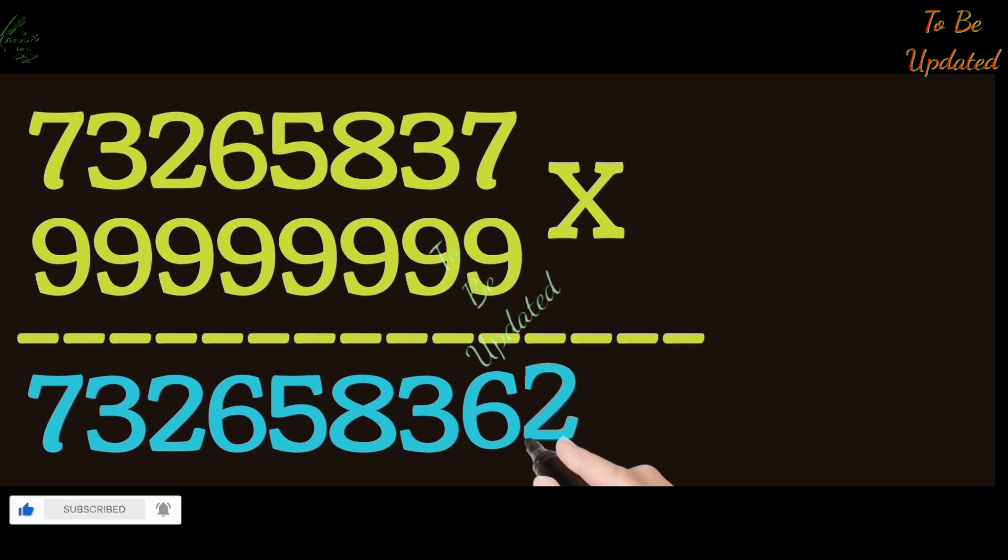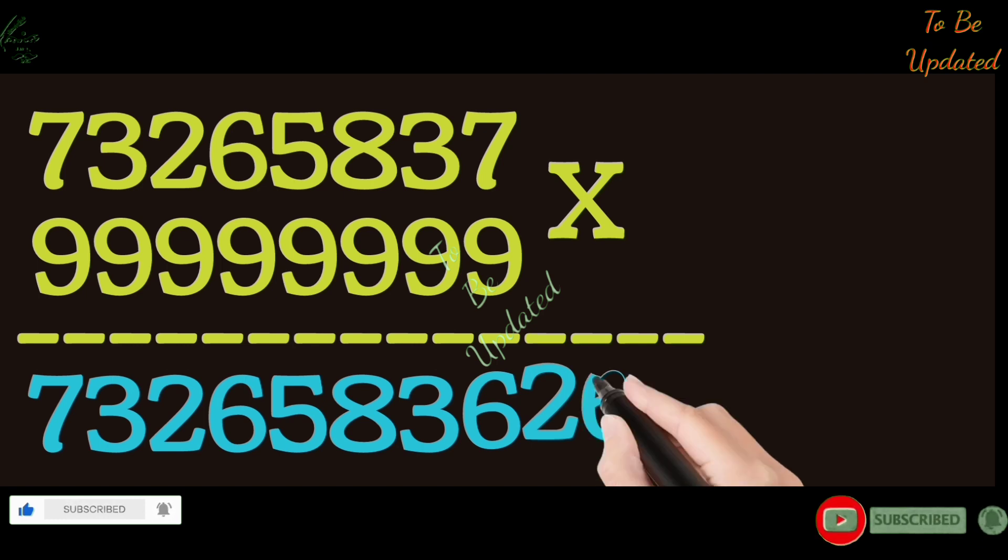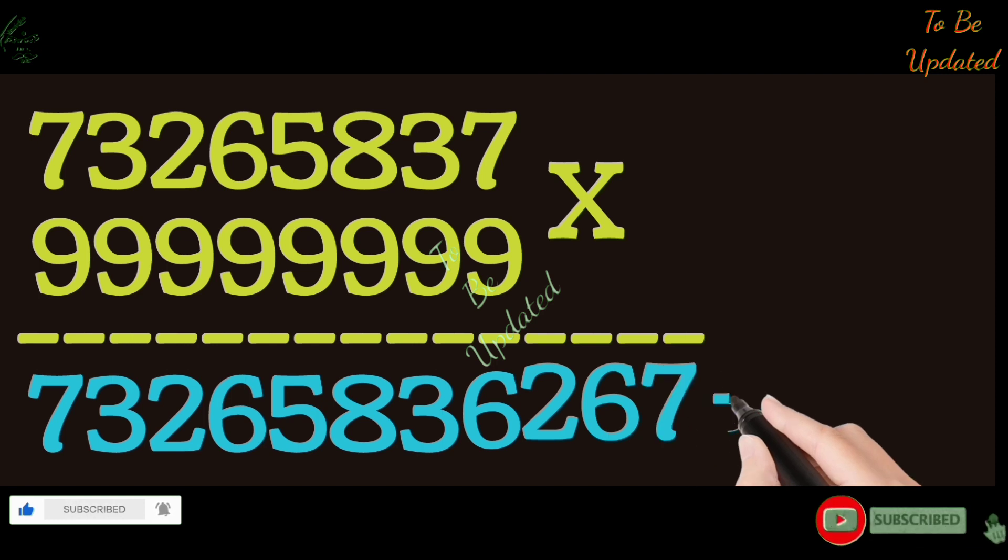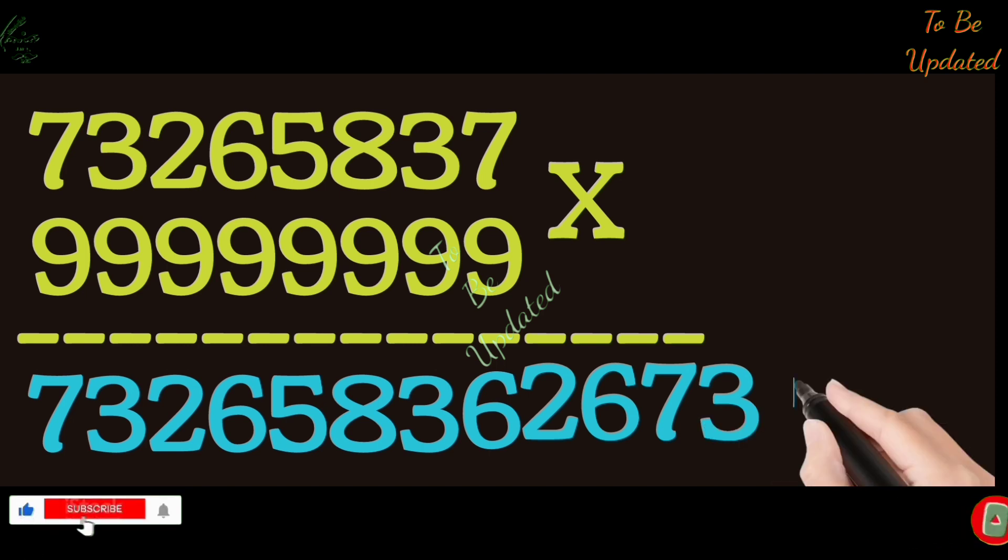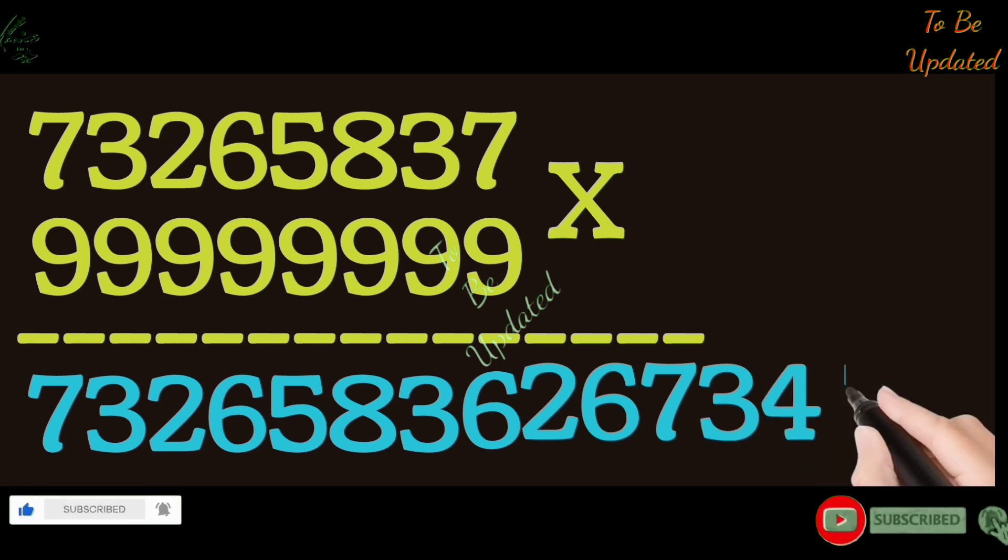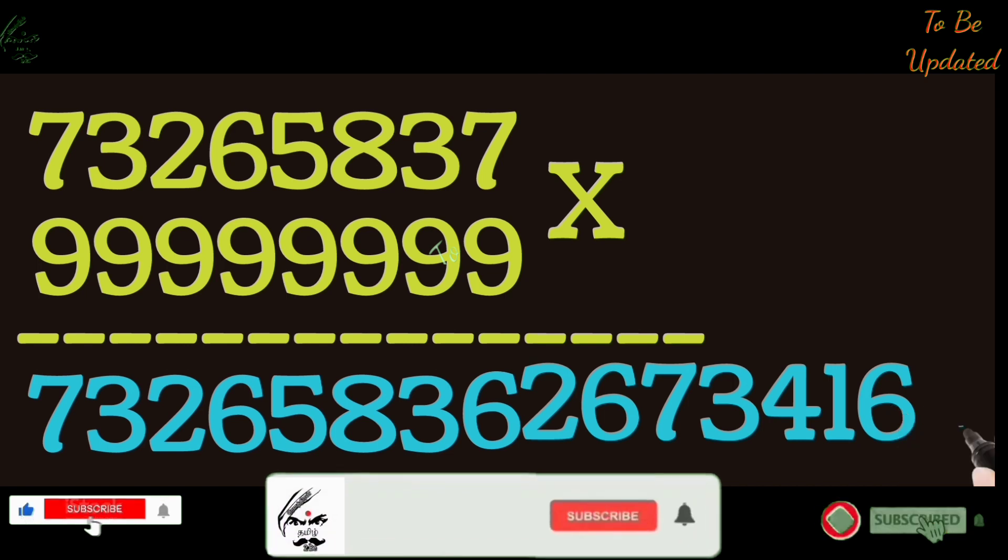2 is subtracted from 9, we get 7. 6 is subtracted from 9, then we get 3. 5 is subtracted from 9, we get 4. 8 is subtracted from 9, we get 1. Then 3 is subtracted from 9, we get 6.